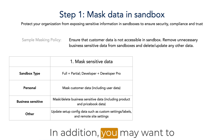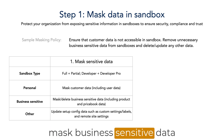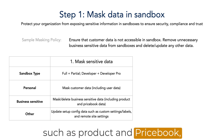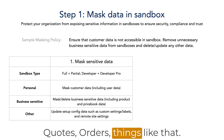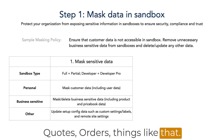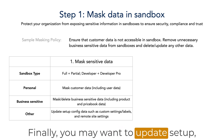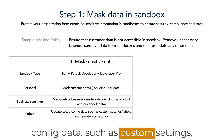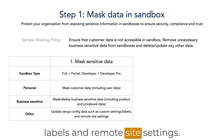In addition, you may want to mask business-sensitive data such as product and price book, cohorts, orders, and things like that. Finally, you may want to update setup config data such as custom settings, labels, and remote site settings.